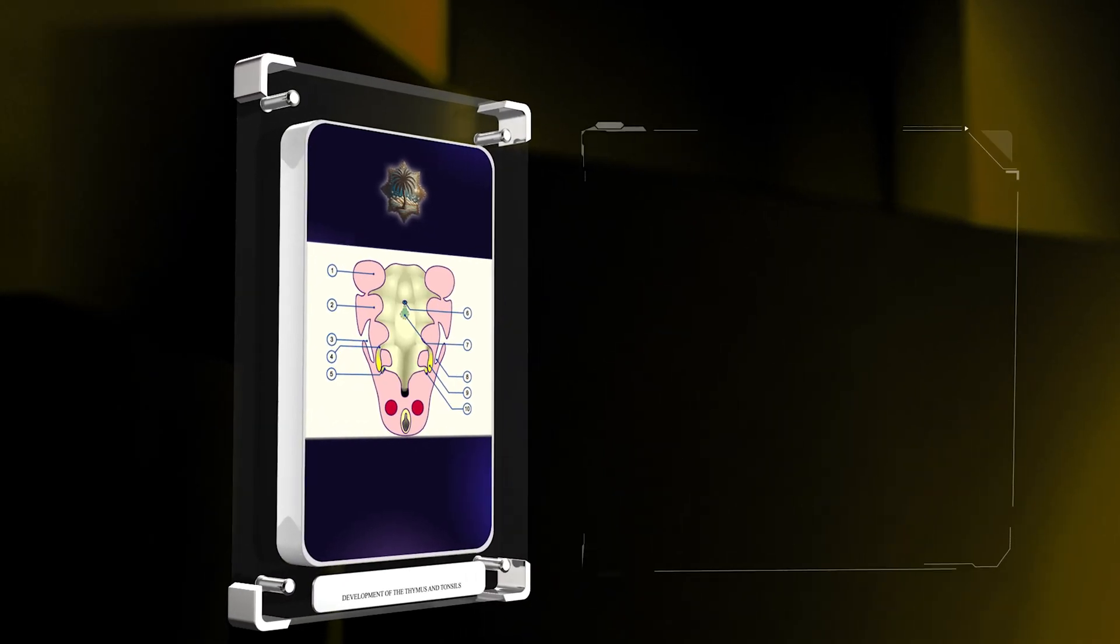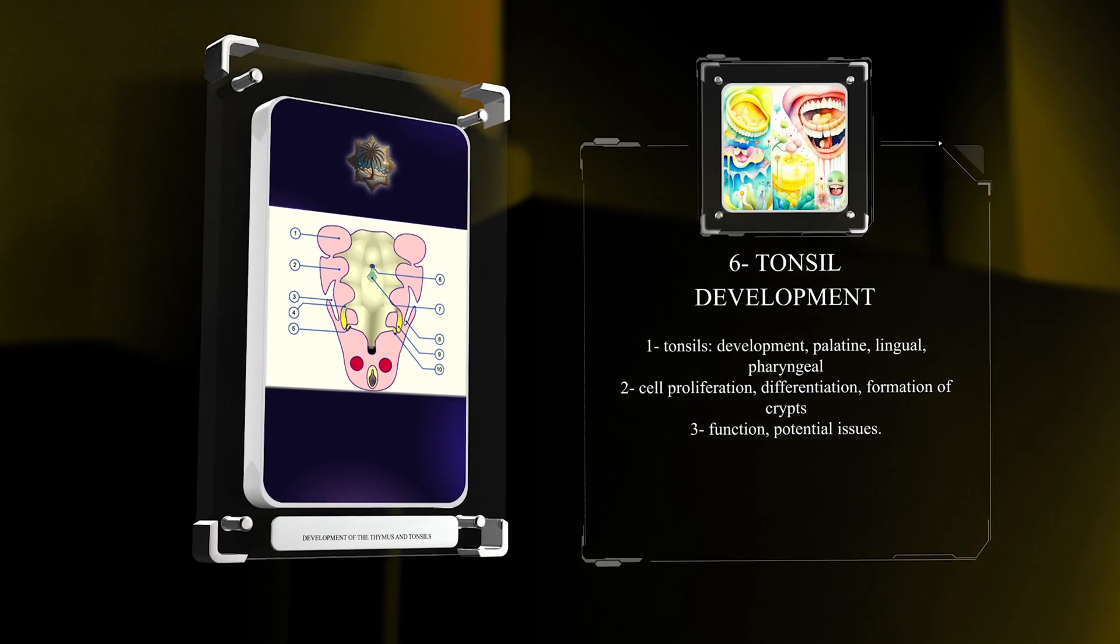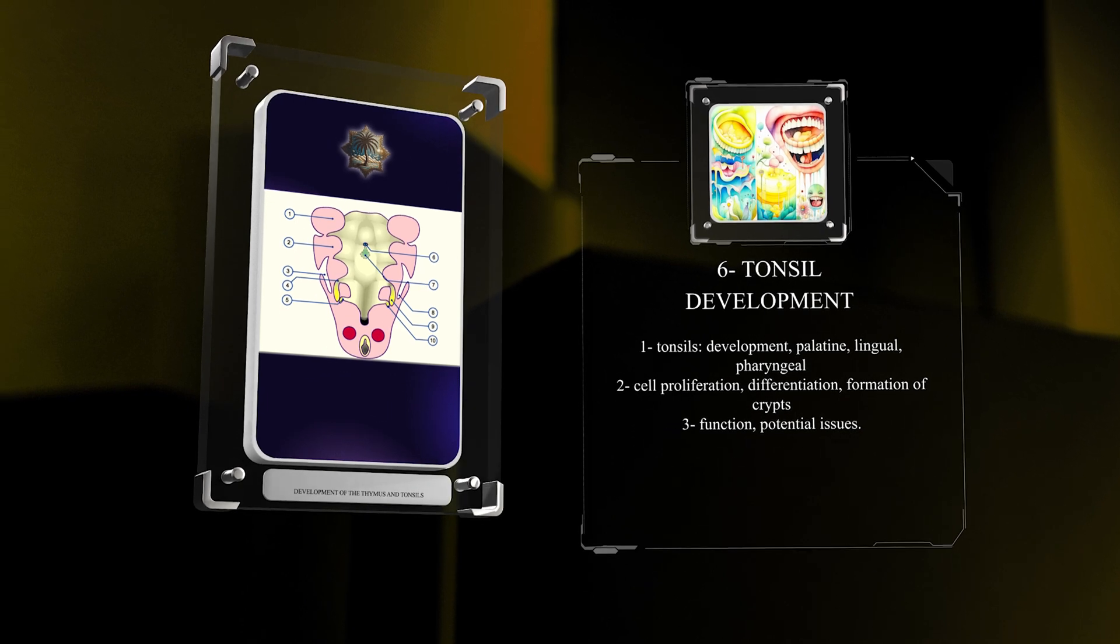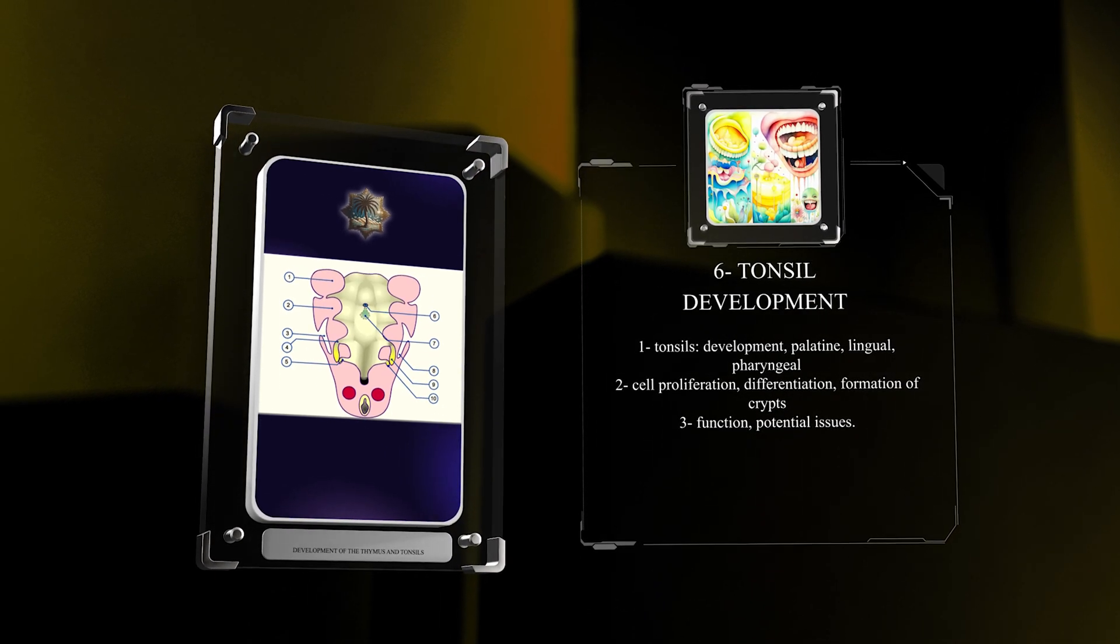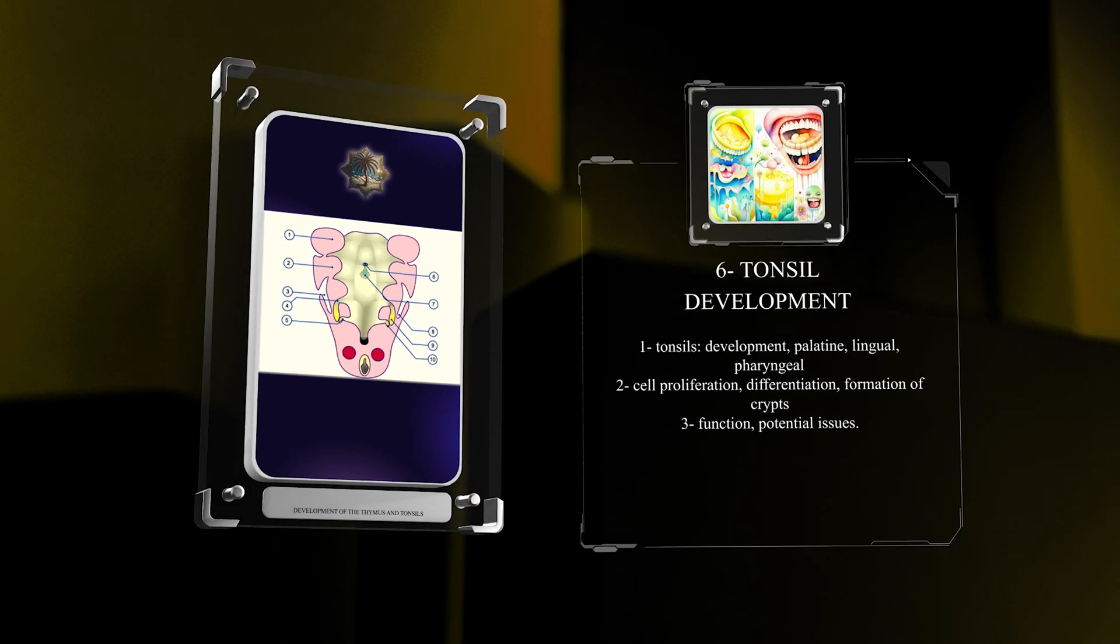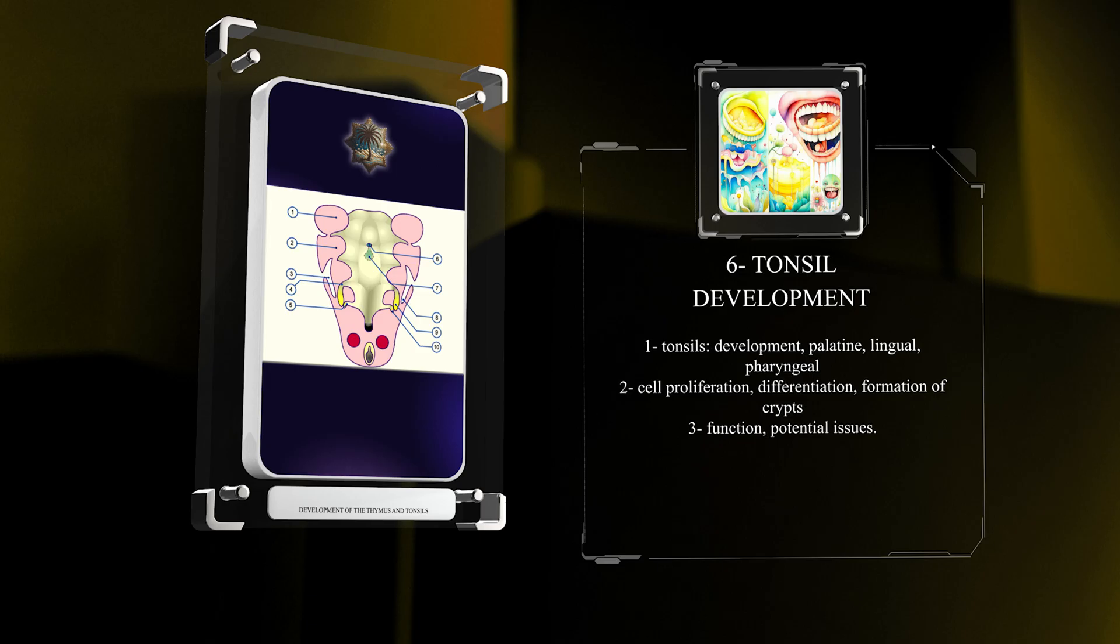In the video, we will explore the intricate development of the tonsils, including the palatine, lingual, and pharyngeal tonsils. We will delve into the crucial processes of cell proliferation, differentiation, and the formation of crypts within each tonsil. By understanding the complexities of these developmental processes, we can gain insights into their function and potential issues that may arise.